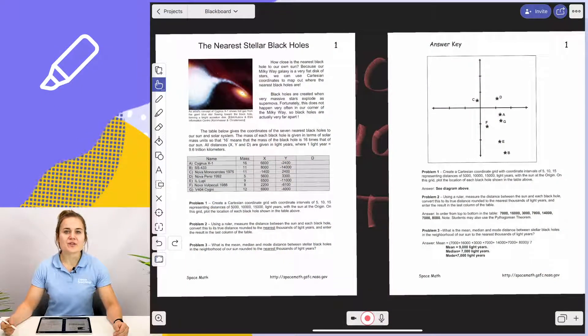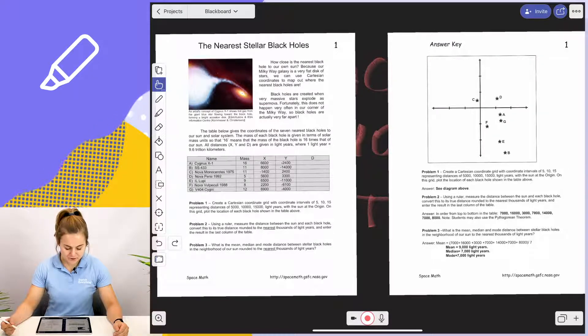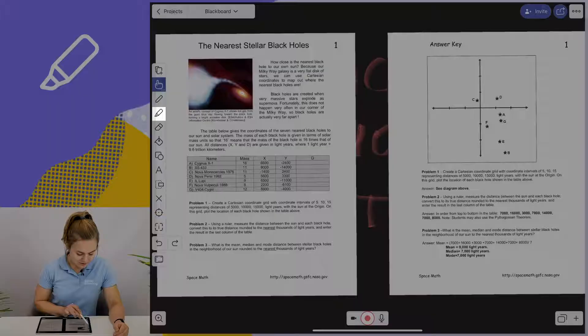Now I'm going to show you how to use the highlighter tool on the PDF file that I've prepared. As you can see, I'm doing a lesson about black holes. To use the highlighter tool, I'm going to tap on the highlighter icon.